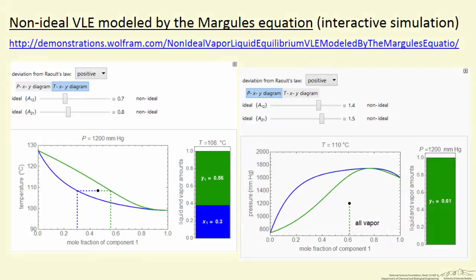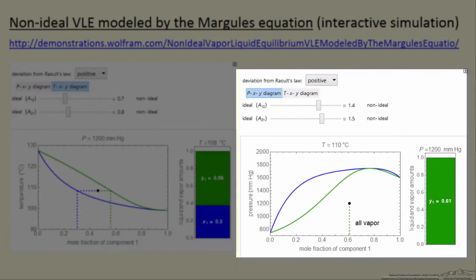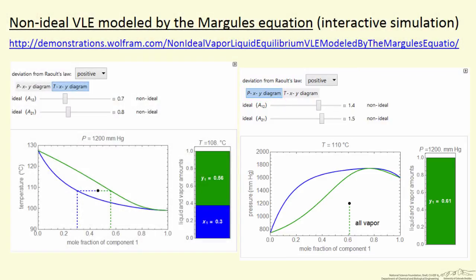You have two options. You can plot temperature versus mole fraction when this button is selected, and that's at just one pressure. Or you can plot pressure versus mole fraction, again selecting this button, and that's at one temperature.